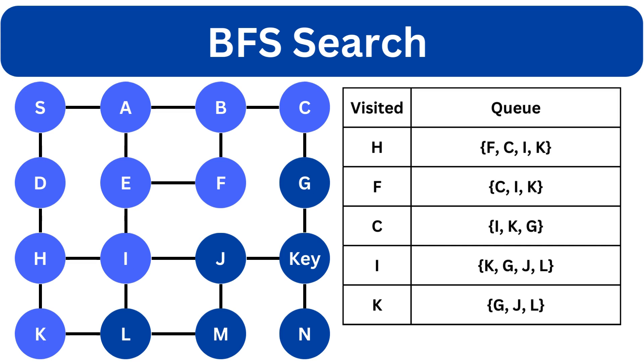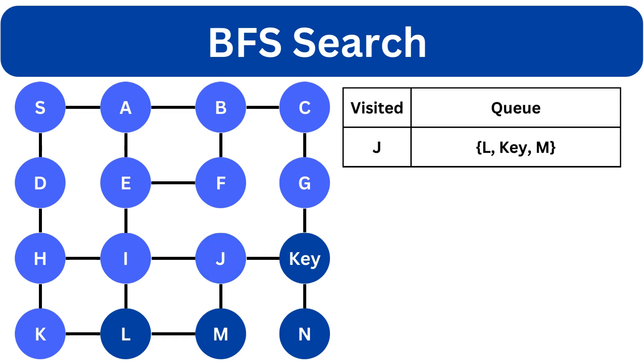Now we visit the G node and we append its neighbor that is the key node at the end of the queue. Next we visit J and its neighbor M will be appended. Now we visit L and we will not append M again because it is already in the list. The next node is the key node. We will dequeue it and check if it is the goal. Yes, it is the goal. And finally we have reached the goal state.